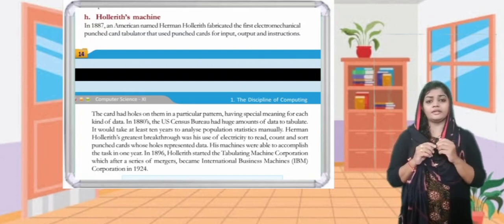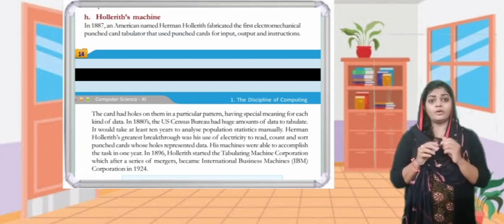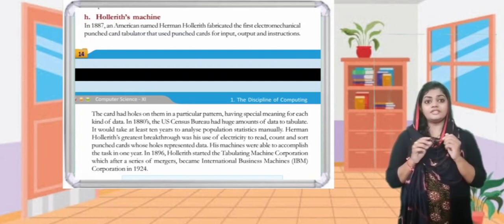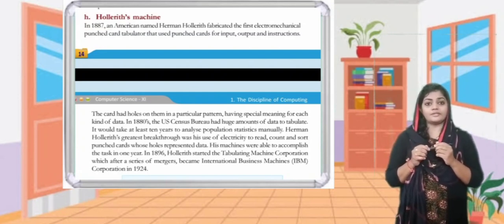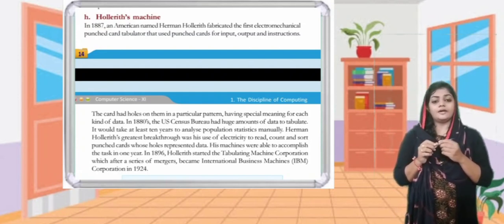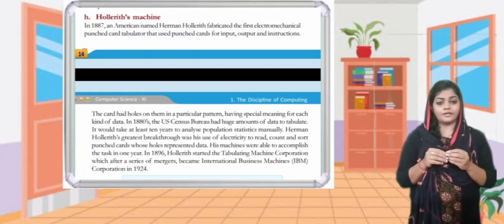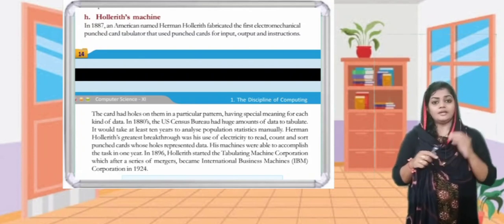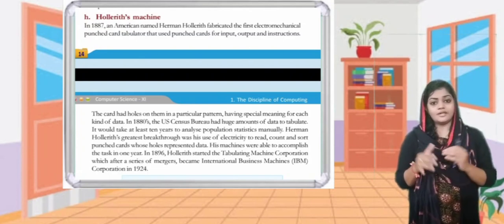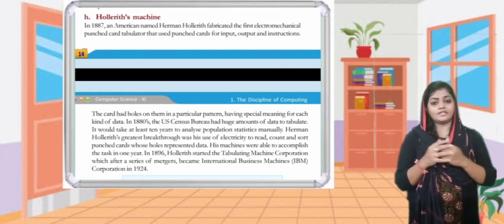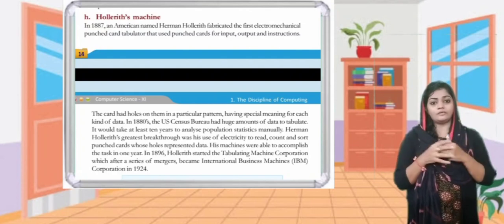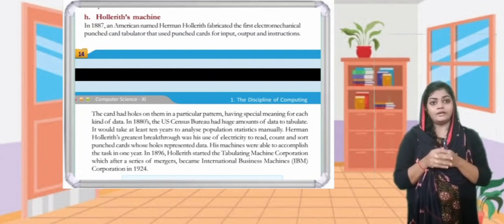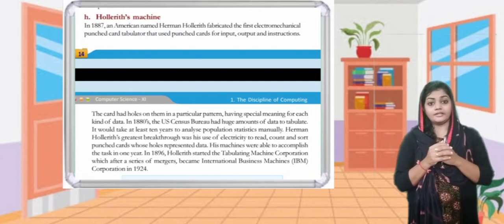Herman Hollerith's great breakthrough was his use of electricity to read, count, and sort punched cards whose holes represent data. This tabulator used this concept in the census — for tables, data input, and all data input. The breakthrough is called electricity use.